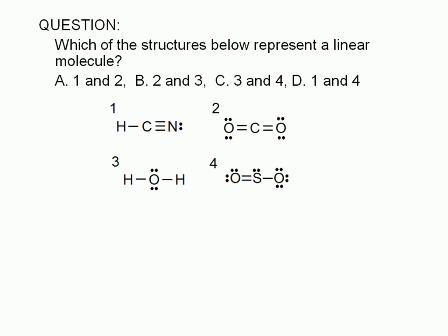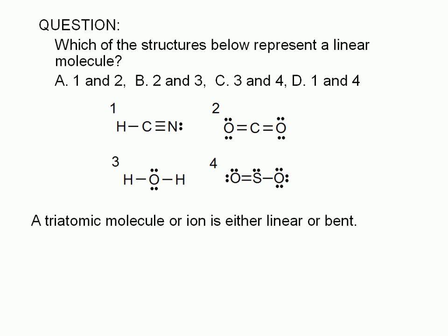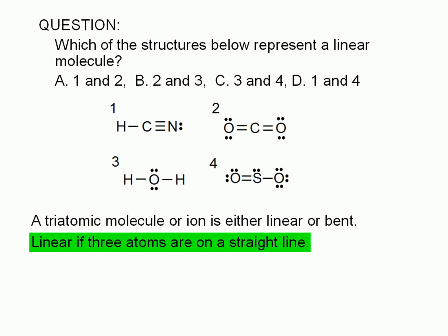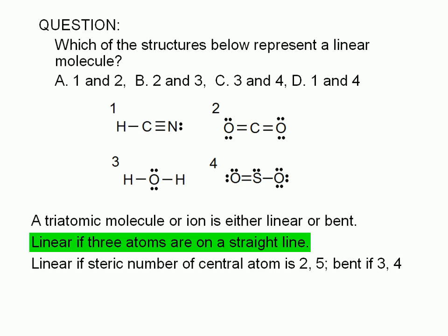If a molecule or ion has only three atoms, then its shape can be described in only two ways: either linear or bent. If the shape is linear, you can draw a straight line through all three atoms, otherwise it's bent. We can use the Lewis structures to determine if the shape is linear by determining the steric number for the central atom.